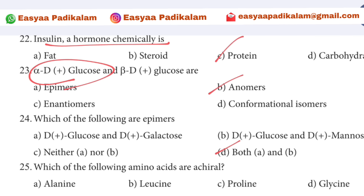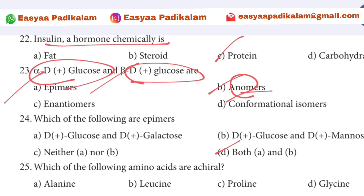23rd question: Alpha glucose and beta glucose — what do we call them? They are anomers. Alpha glucose and beta glucose differ at C1 and are called anomers.